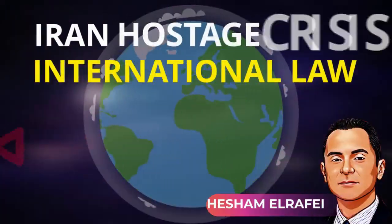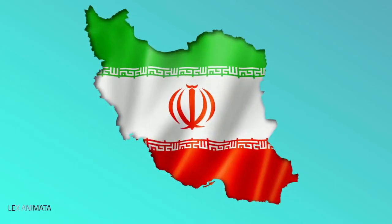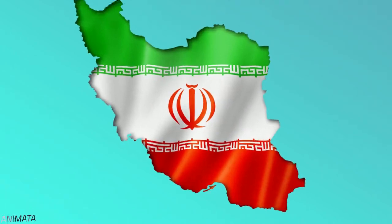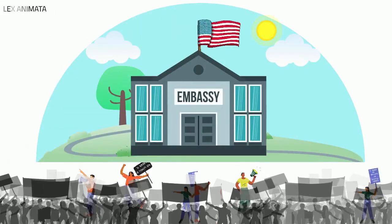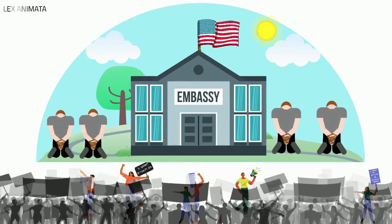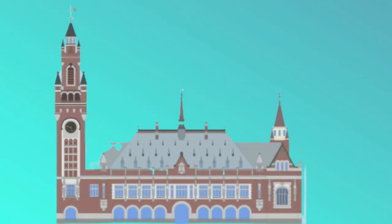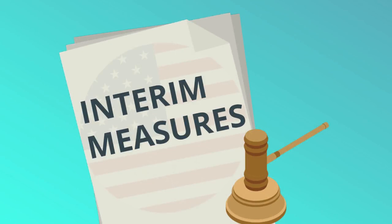Iran Hostage Crisis — International Law Visualized. In 1979, militants occupied the American embassy in Iran and detained its diplomatic staff as hostages. The United States filed a complaint against Iran with the International Court of Justice, requesting the imposition of interim measures, but Iran did not participate in the proceeding.